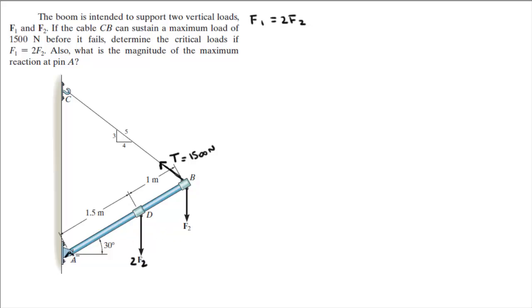At A we have a reaction in the Y and a reaction in the X. So now that we have our free body diagram, let's start building some equations. The first thing we can find is the X component of the tension and the Y component of the tension to make this problem much easier.